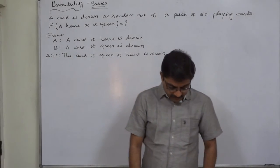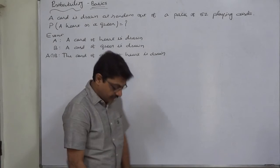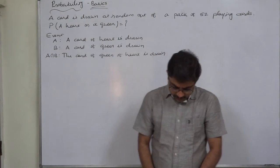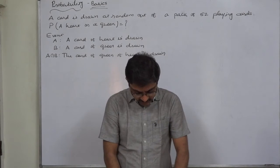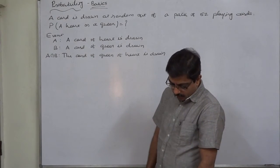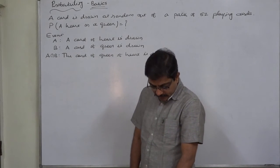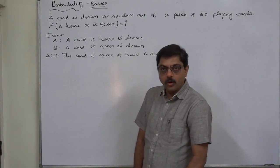Hello friends, the next case in basics of probability is: a card is drawn at random from a pack of 52 playing cards. Find the probability that it is a heart or a queen.